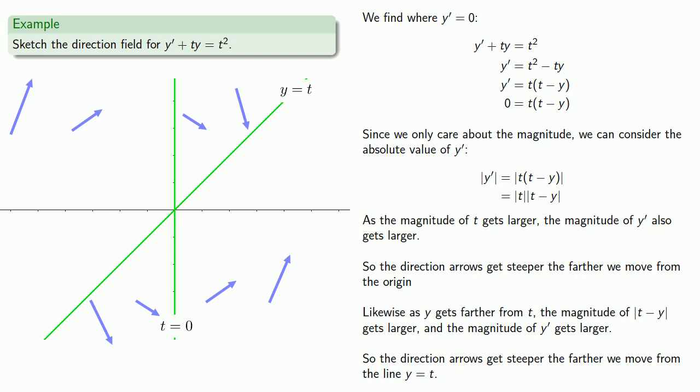Alternatively, the closer we are to the line y = t, the shallower our arrows are going to be. We draw some additional shallower direction arrows near the line. This gives us a sketch of what our direction field looks like.